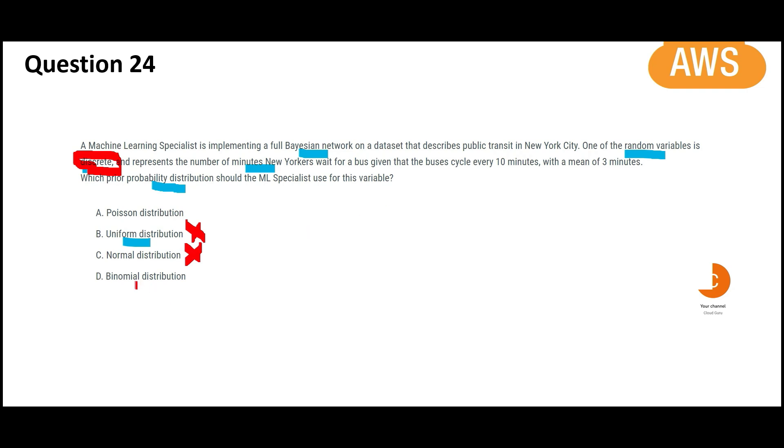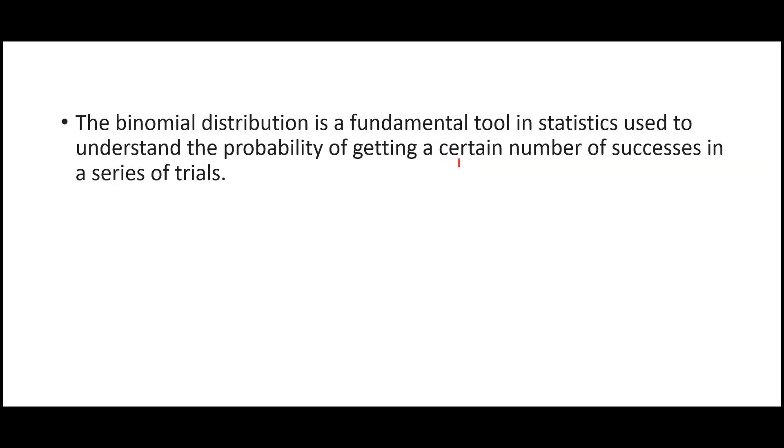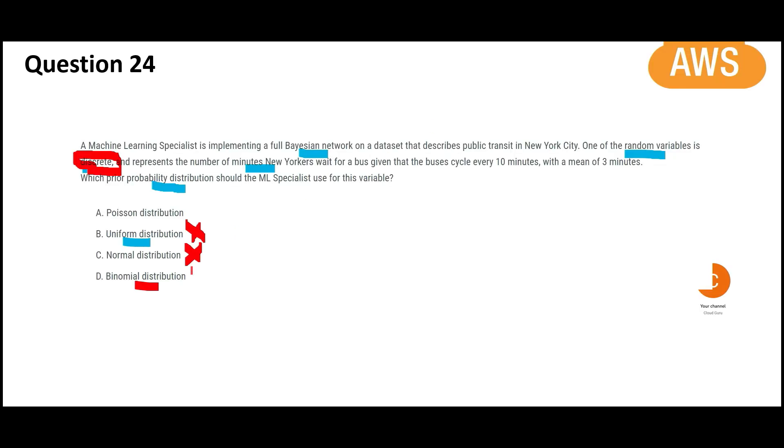Now let us think of binomial distribution. It is a statistical tool to get certain number of successes probability. If you are flipping a coin 10 times, then you want to understand what is the probability of getting success 8 times. You use binomial distribution. But in our case, it will not fit the bill.